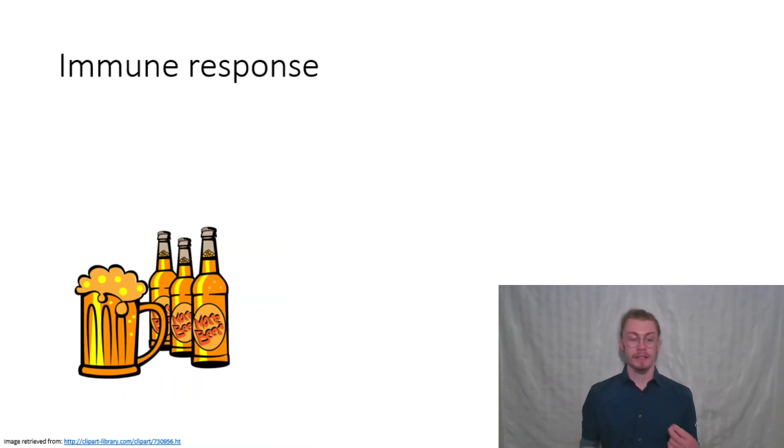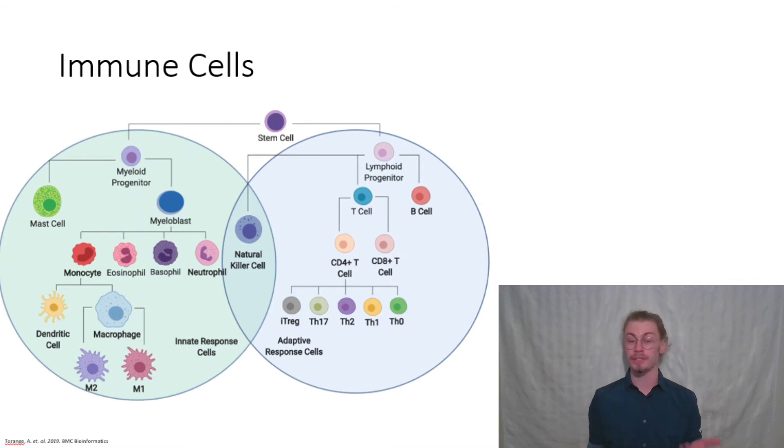One thing that this illustration does not show is how binge drinking affects your immune response. From previously studied literature, we know that binge drinking actually inhibits the immune response, but what is unclear is the specific pathway in which that happens. Your immune response is mainly mediated by your immune cells, and you have a lot of them. They're broken up into two major groups: on the left you have your innate response cells, which have fast-acting non-specific responses to infections, and your adaptive response cells, which take longer to initiate but have a tailored response to different pathogens and infections.